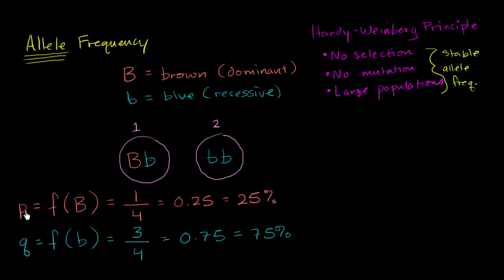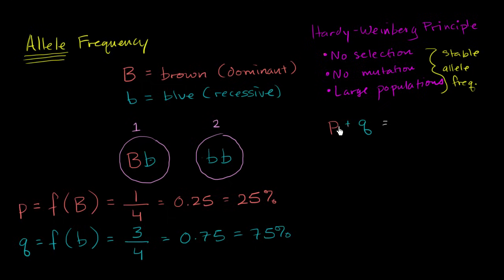Based on that, we've already seen that if we take the frequency of the dominant allele, which we denote with P, and add the frequency of the recessive allele, denoted Q, that adds up to 100% or one. It's always going to add up to one, because we're assuming there are only two alleles in the population. So you have a 100% chance of getting one of these two — whatever P is, 100% minus that is Q. So P plus Q equals one.